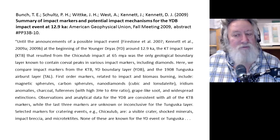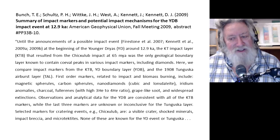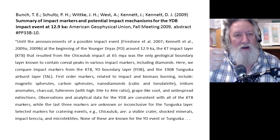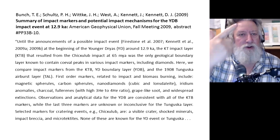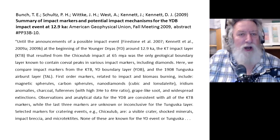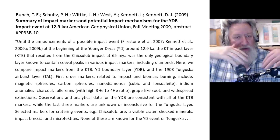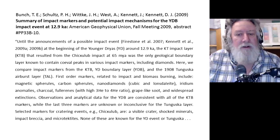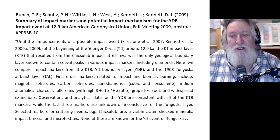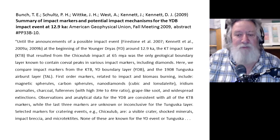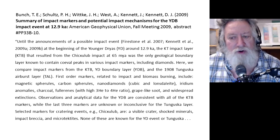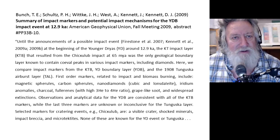Selected markers for cratering events — for example, Chicxulub — are: one, a visible crater; two, shocked minerals; three, impact breccia (broken rock); and microtectites. At this point, these are not known for the Younger Dryas boundary event.